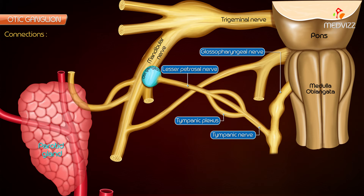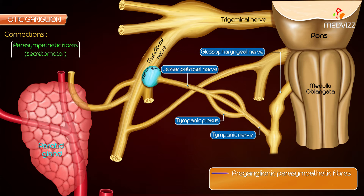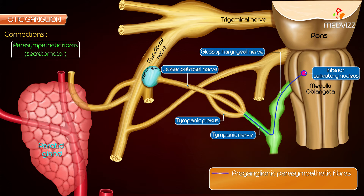Connections. Parasympathetic or secretomotor fibers: preganglionic parasympathetic fibers arise from the inferior salivatory nucleus, passed successively through the glossopharyngeal nerve, tympanic branch of the glossopharyngeal nerve (or Jacobson's nerve), tympanic plexus, and the lesser petrosal nerve to relay in the ganglion.